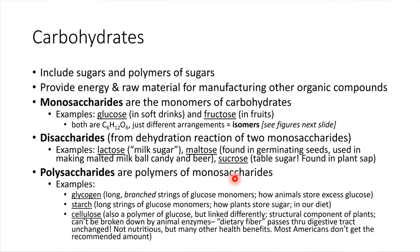Three examples of polysaccharides: first, glycogen, which is present in animals. This is how animals and people store extra glucose molecules from our diet. In humans, glycogen is stored in the liver and in all of your muscles. Starch is essentially the same thing — stored glucose monomers connected together — but this is how plants store extra glucose.